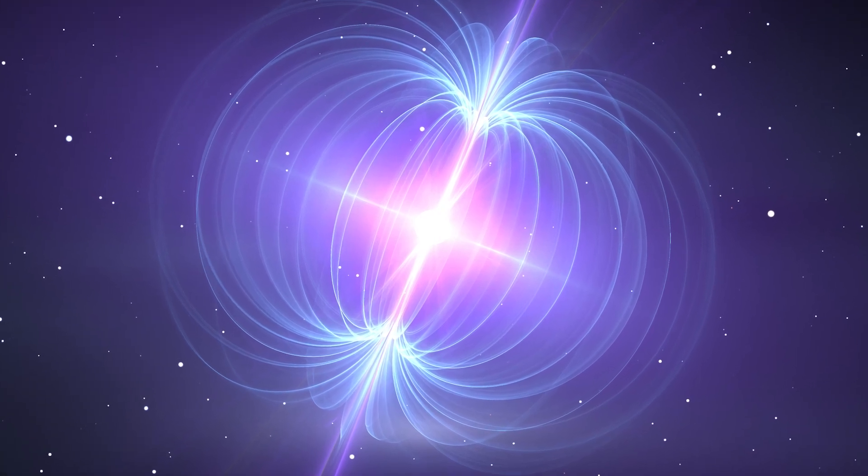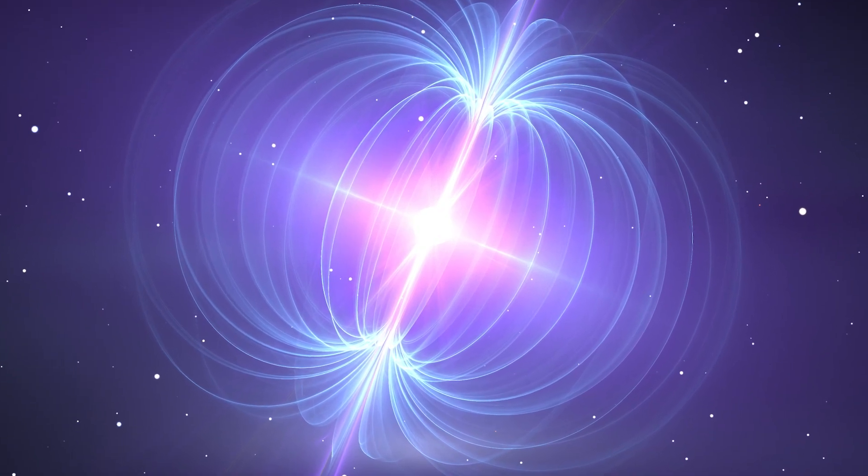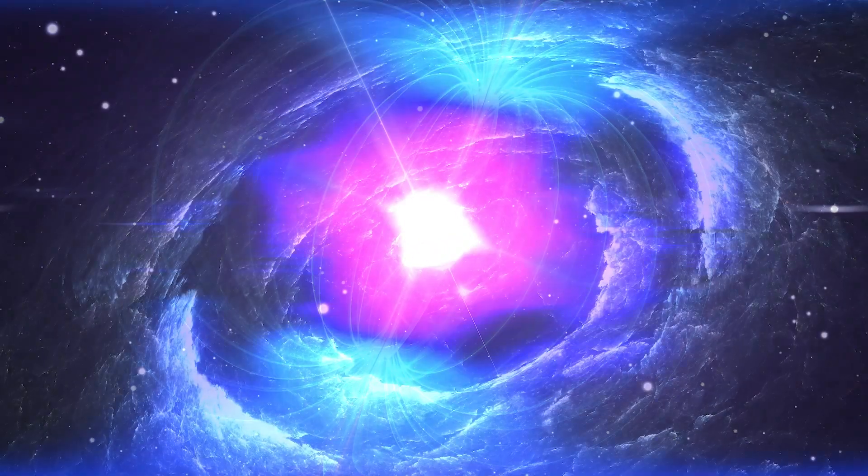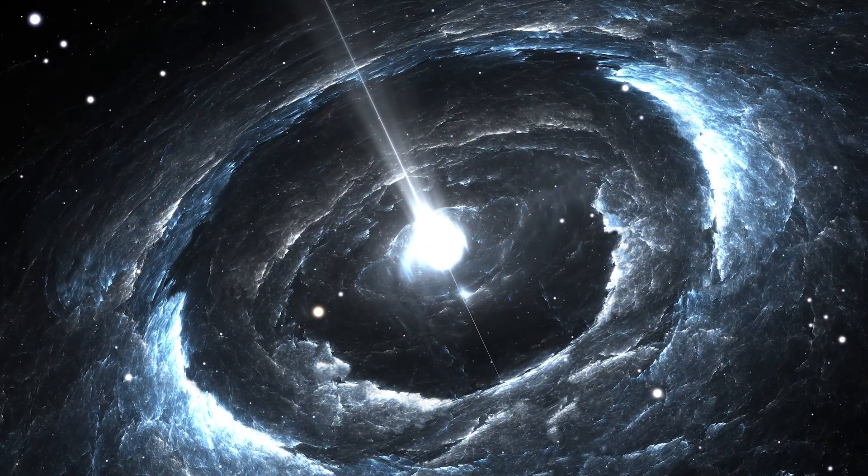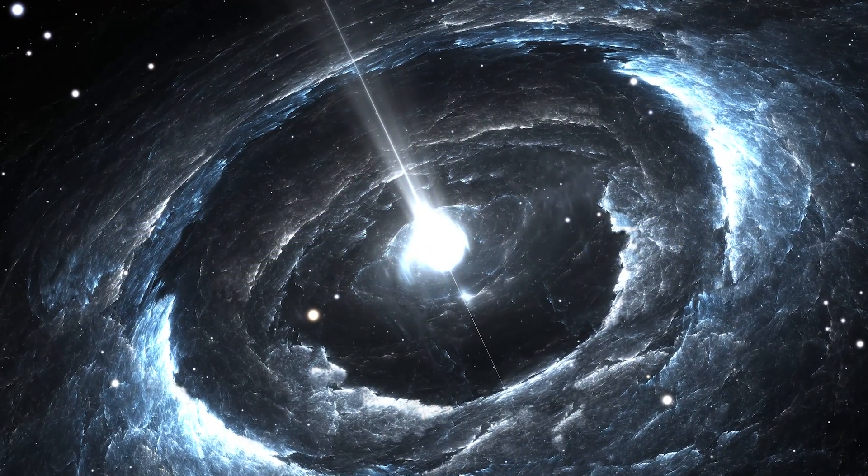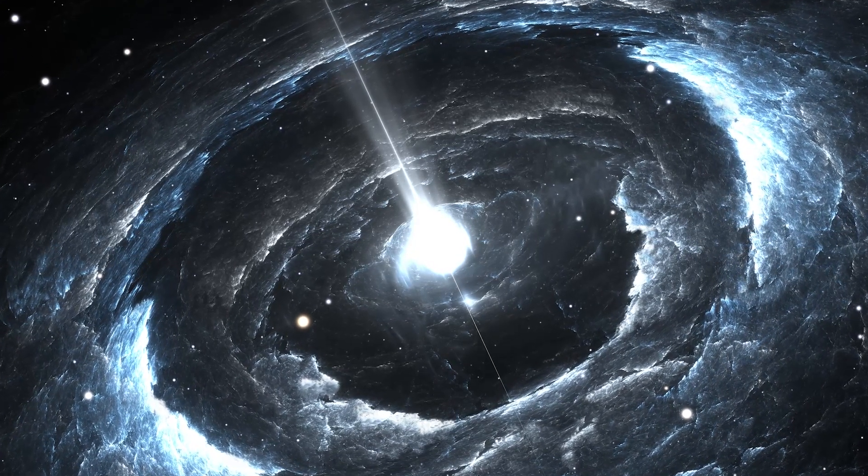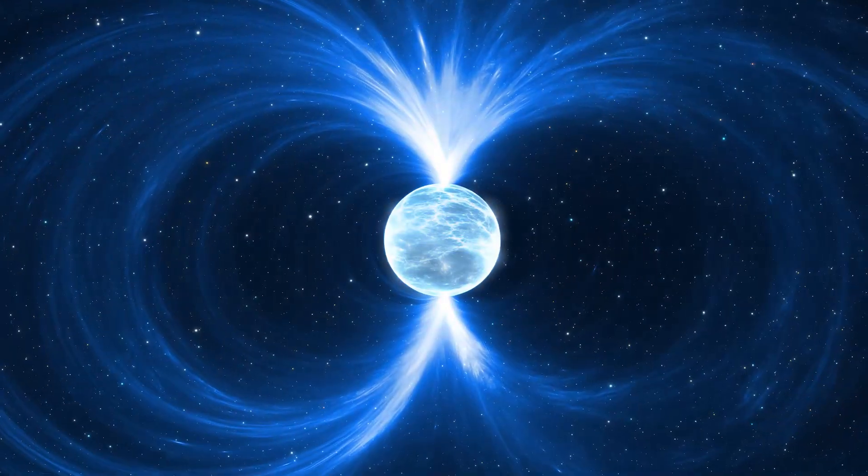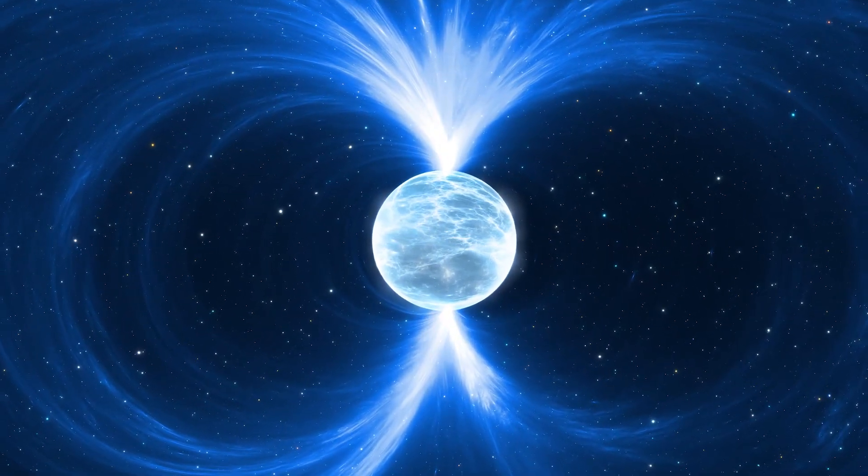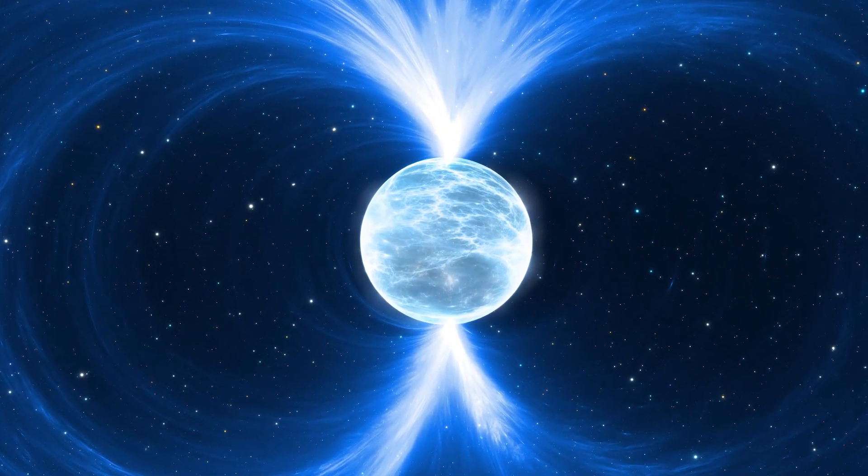A teaspoon of it would weigh about 10 million tons. Its gravitational field is intense. It is a collapsed star so dense that electrons and protons do not exist separately but are fused to form neutrons. It acts like an enormous magnet. Can you guess what we're talking about? Of course, a neutron star!